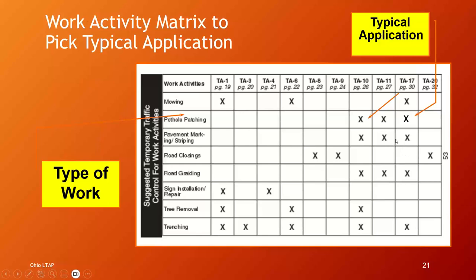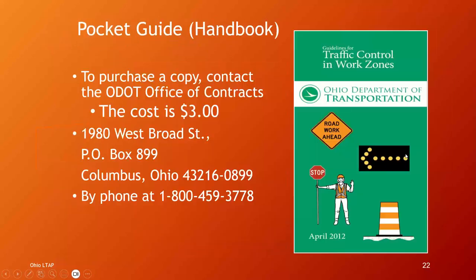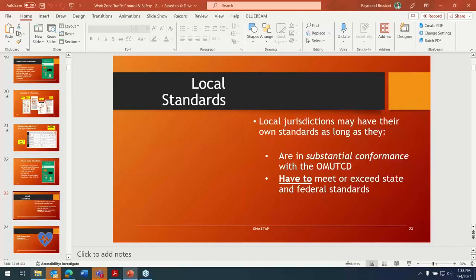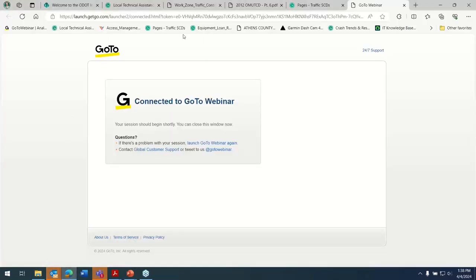The app also has a work activity matrix to help you select a typical application based on the type of work you're conducting — mowing, pothole patching, trenching, etc. For example, if you're pothole patching on a two-lane road, you'd see that you can select TA-10, which is a flagging operation, or TA-17, which is the mobile operation we just talked about. ODOT crews are trained to select one or the other, but I'll have some other ideas to discuss when we get to the section on mobile operations.